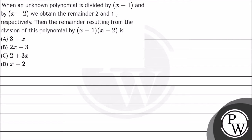Hello everyone, let's see the question. The question says: when an unknown polynomial is divided by x minus 1 and x minus 2, we obtain the remainders 2 and 1 respectively. Then what is the remainder resulting from the division of the polynomial by x minus 1 times x minus 2?